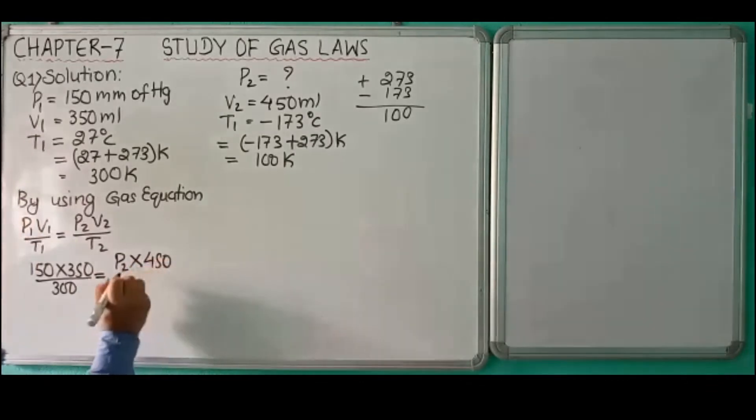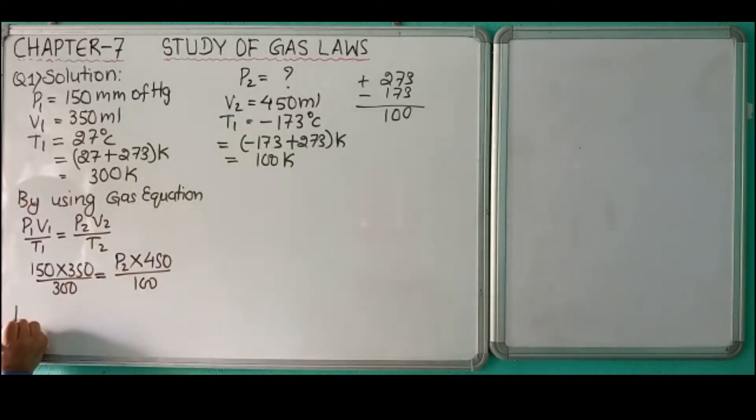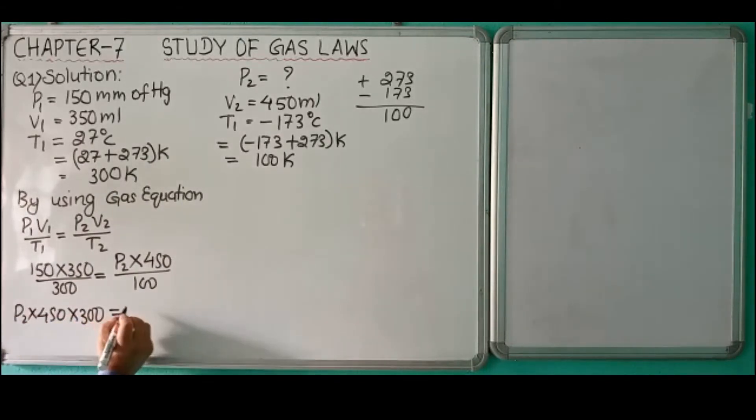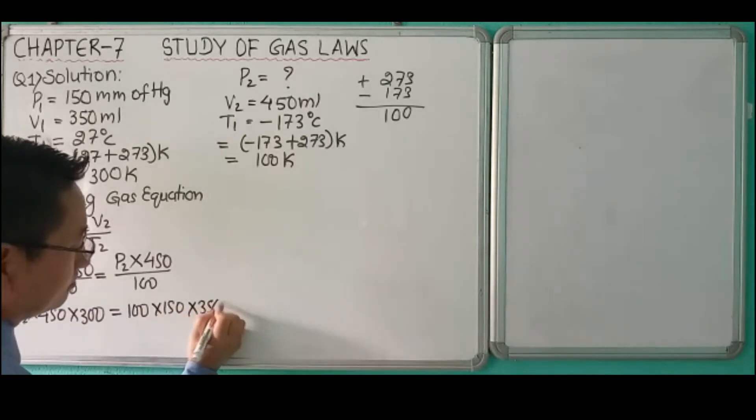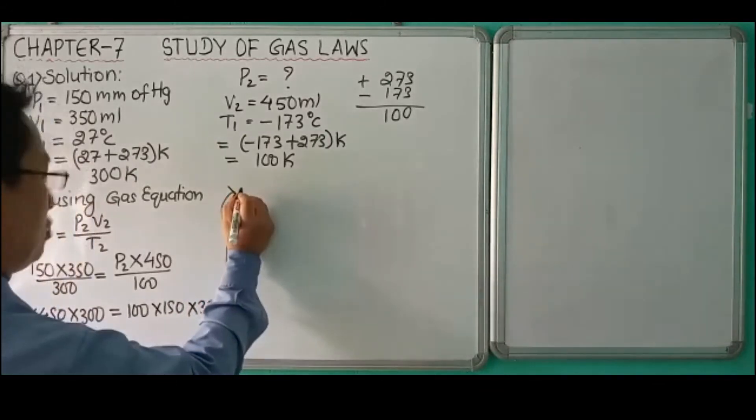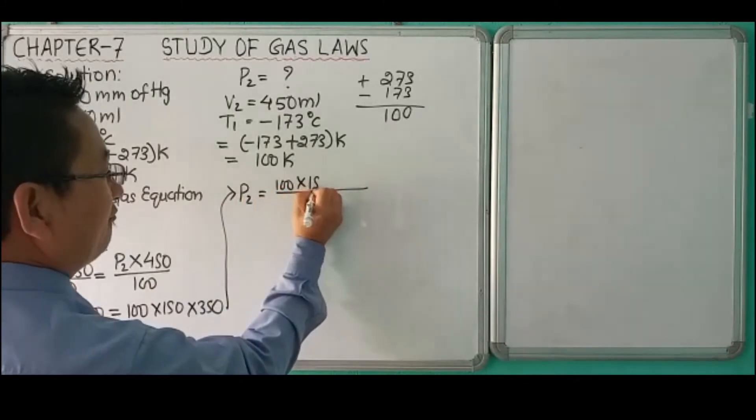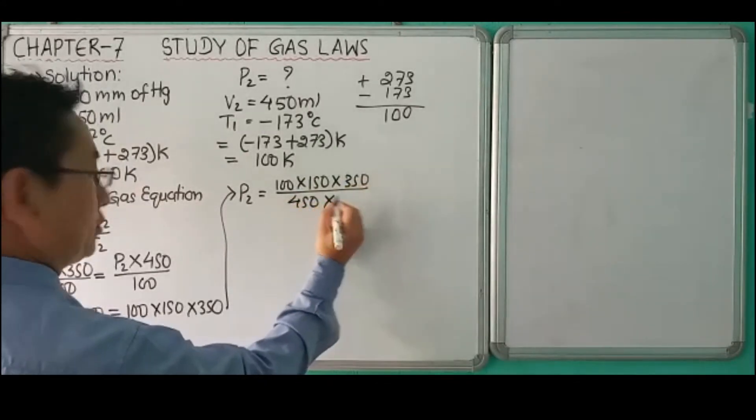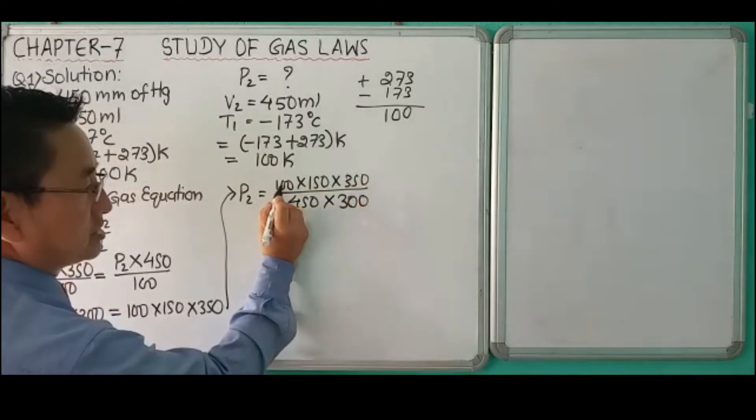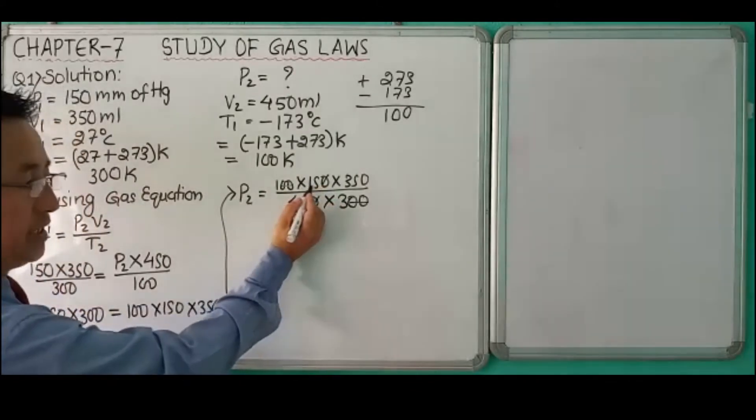We'll cross multiply: P2 times 450 times 300 equals 100 times 150 times 350. So P2 equals 100 times 150 times 350 over 450 times 300. We cancel the two zeros here.